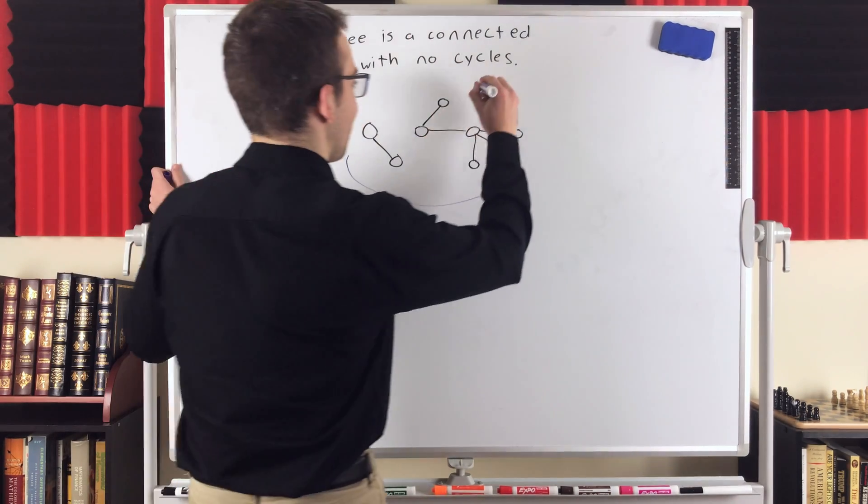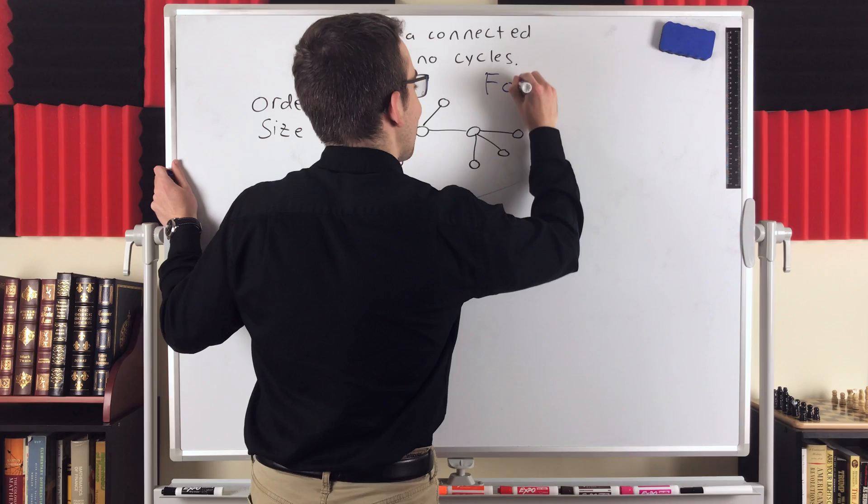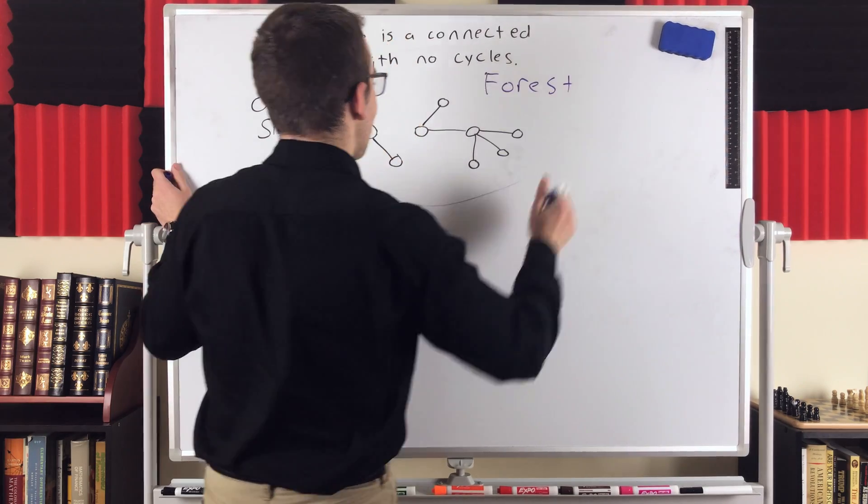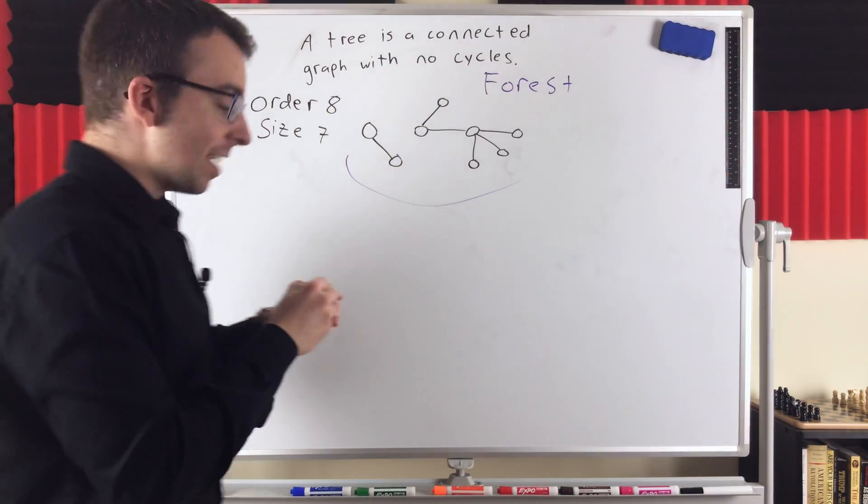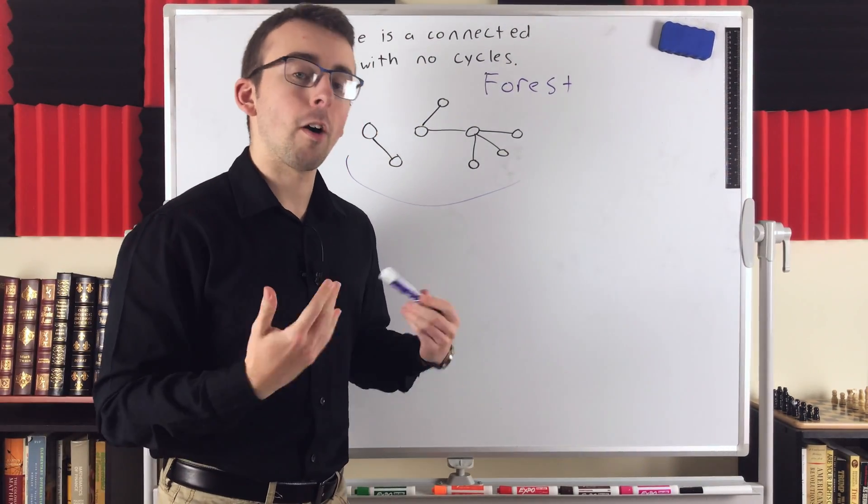So if we got, if the components of our graph are all trees, what do you think we call that? Well, it's graph theory. So of course, we call it a forest. Very intuitive, pretty easy to remember. A forest is a graph whose components are all trees.